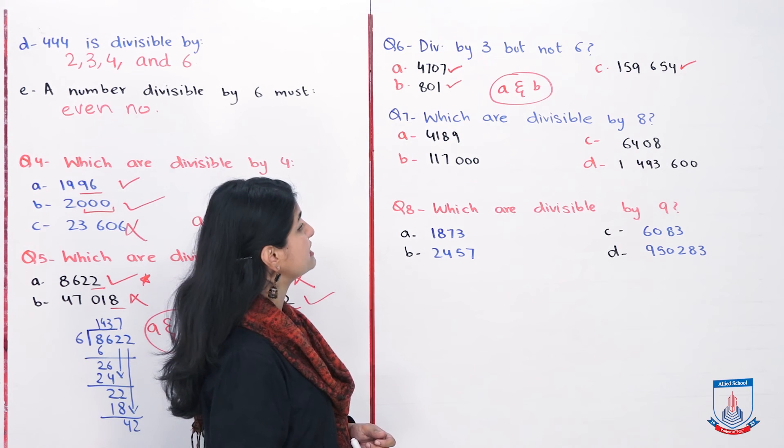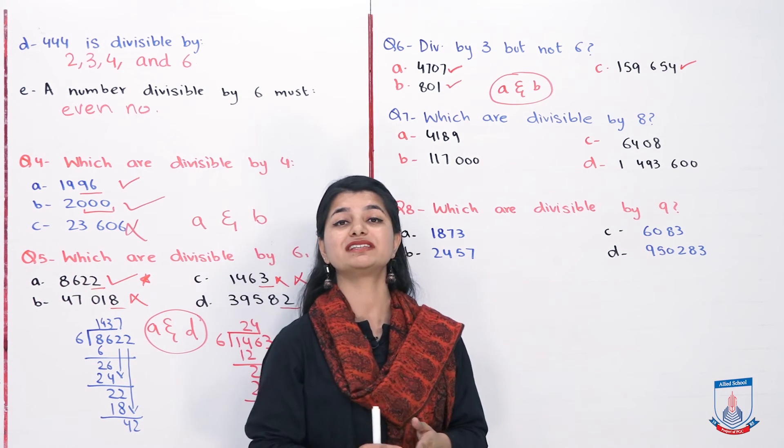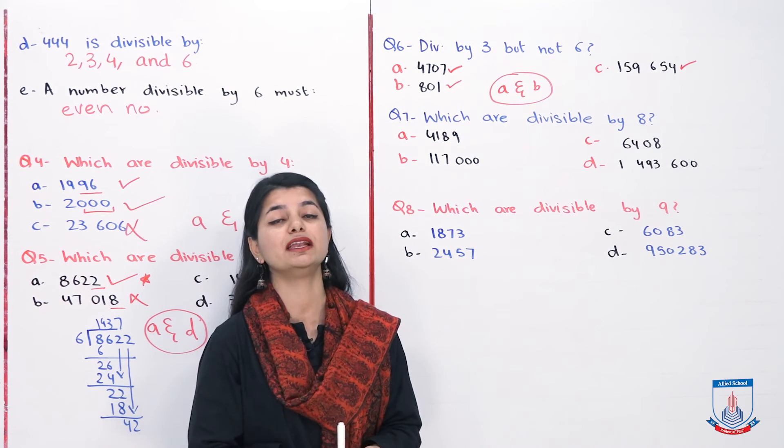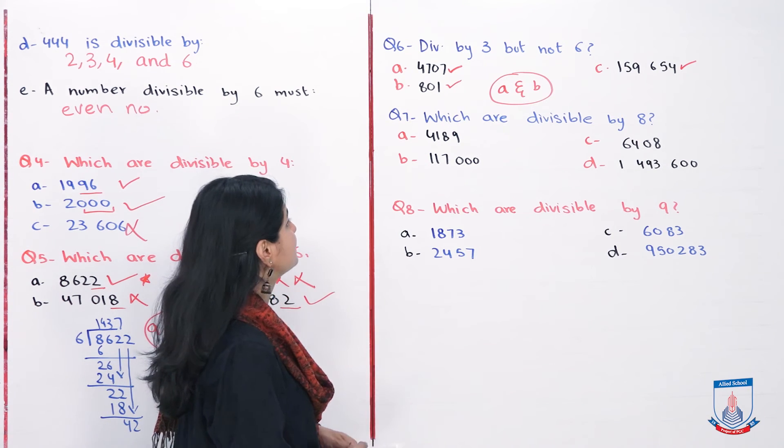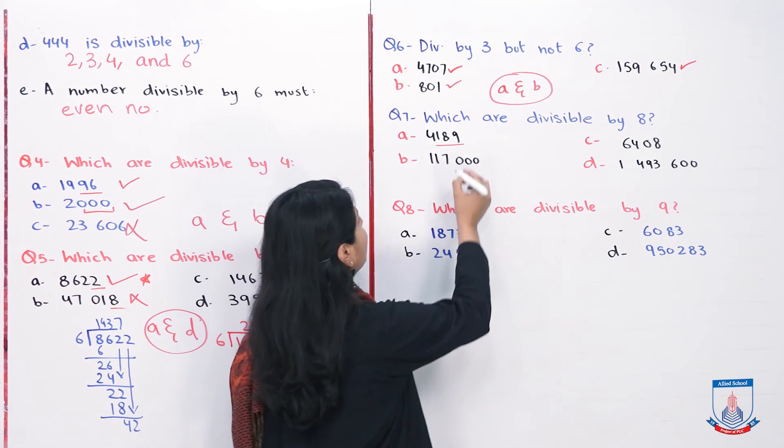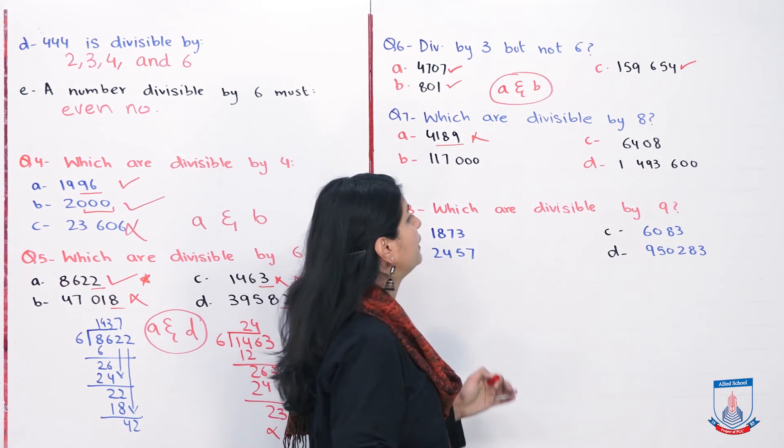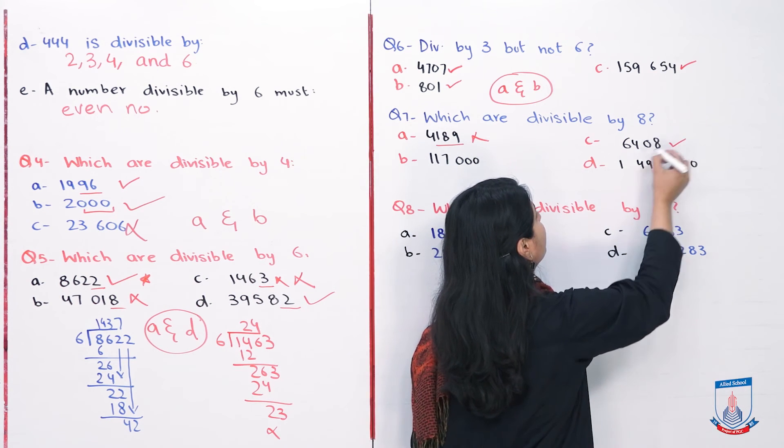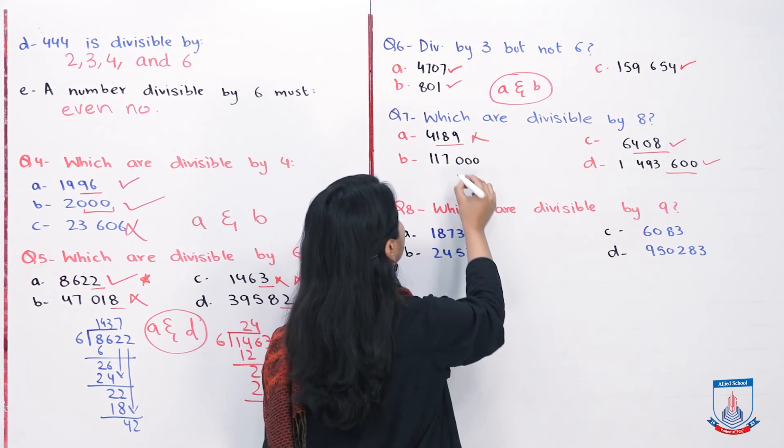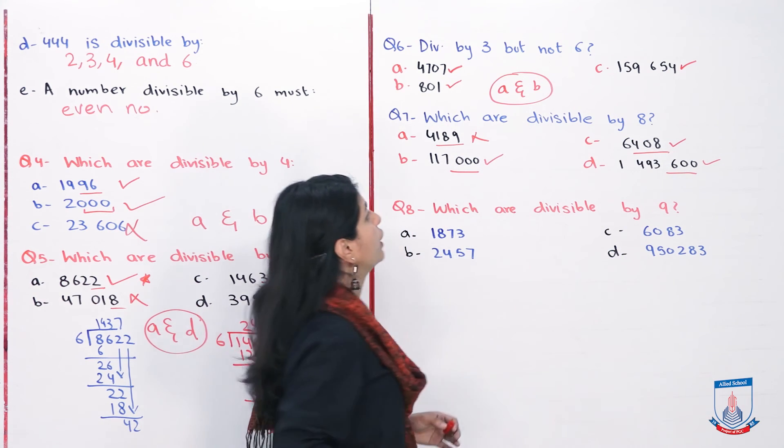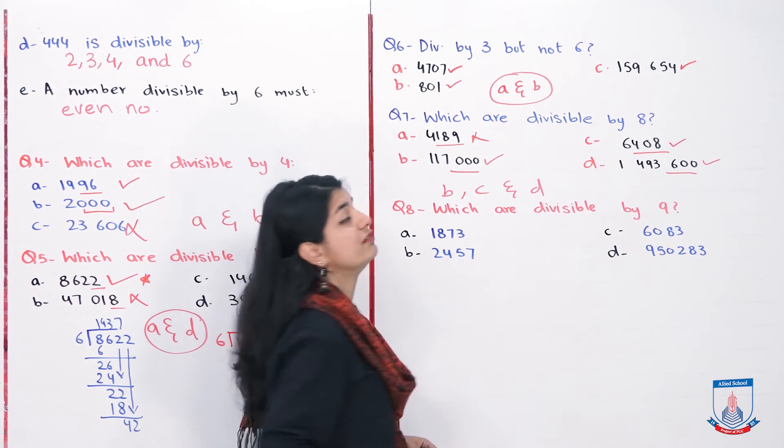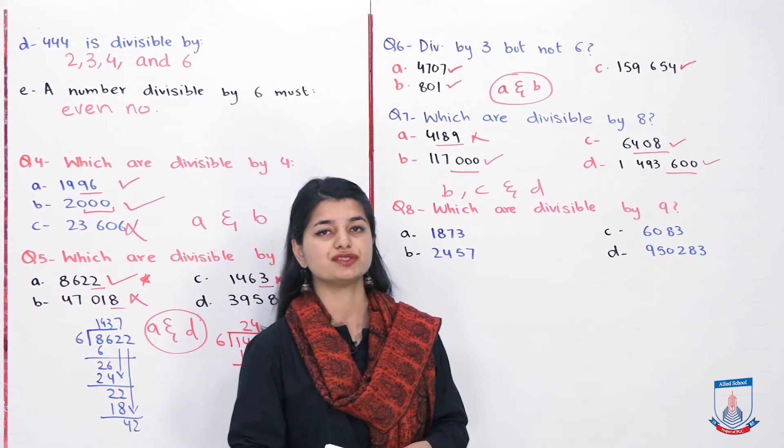Lastly, which are divisible by 8? For 8, the rule is either the last 3 digits are 0, or the last 3 digits are divisible by 8. First, 189: this is not in the table of 8, so A is cancelled. B, 408, is in the table of 8, 600 also works. And then we have 3 zeros. So which numbers? B, C, and D are all divisible by 8. This will be your answer.